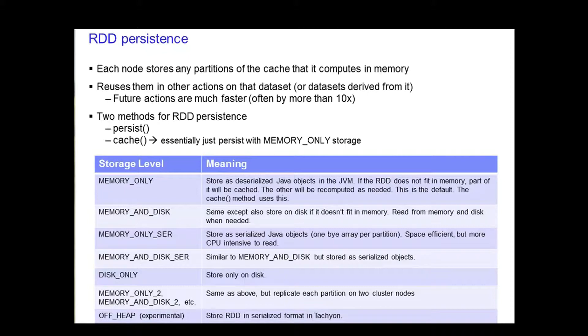One of the key capabilities of Spark is its speed through persisting or caching. Each node stores any partitions of the cache and computes it in memory.